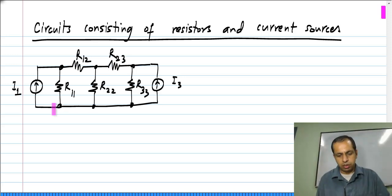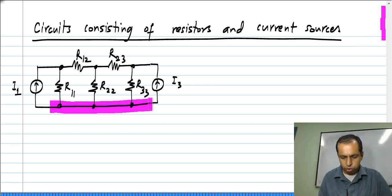I have to omit one of the nodes while writing KCL equations. And in this example, I will choose to omit this one and write KCL equations at these 3 nodes.